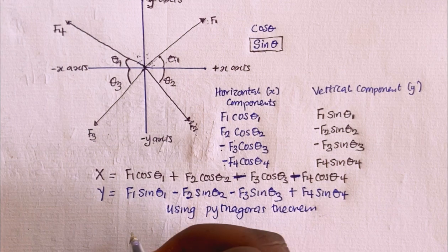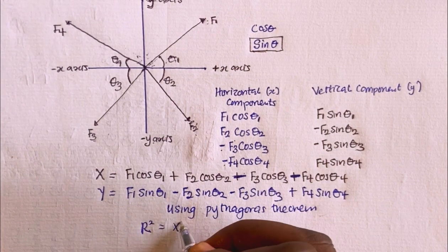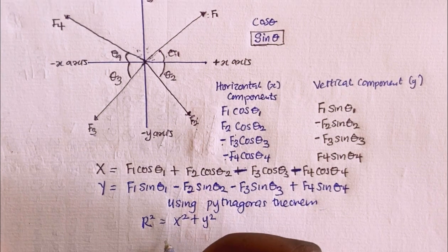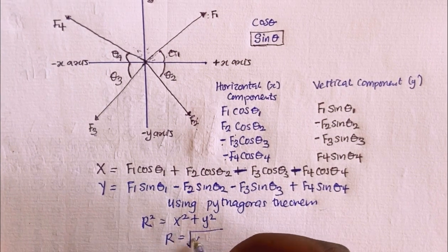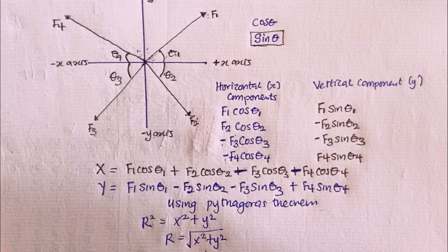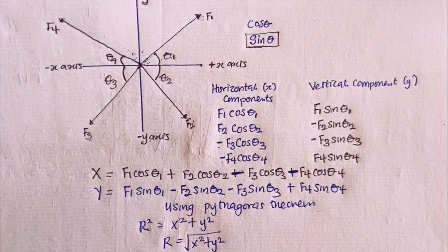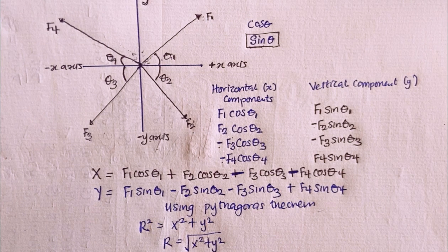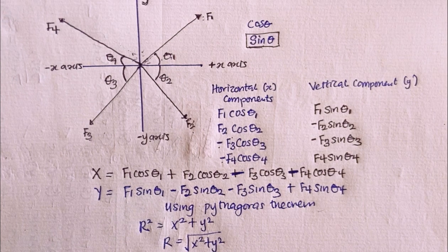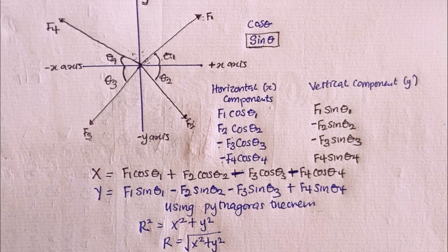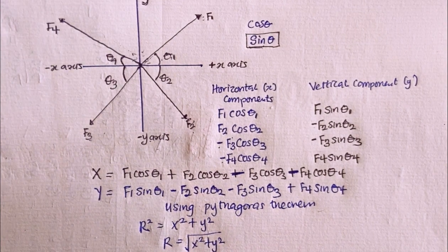Using Pythagoras' theorem, the resultant force squared equals x squared plus y squared, so the resultant force R equals the square root of (x² + y²). In summary, when dealing with more than two forces at a point: first resolve each force into horizontal and vertical components, then take the algebraic sums of both components, and finally apply Pythagoras' theorem to calculate the resultant force.